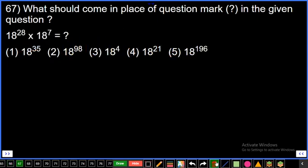Question number 67: 18 power 28 into 18 power 7. Using a power m into a power n equals a power m plus n. So 18 power 28 plus 7, that is 18 power 35. First option.